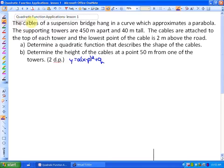So this problem says, the cables of a suspension bridge hang in a curve which approximates a parabola. The supporting towers are 450 meters apart and 40 meters tall. The cables are attached to the top of each tower, and the lowest point of the cables is 2 meters above the road. Part A says, determine a quadratic function that describes the shape of the cables.